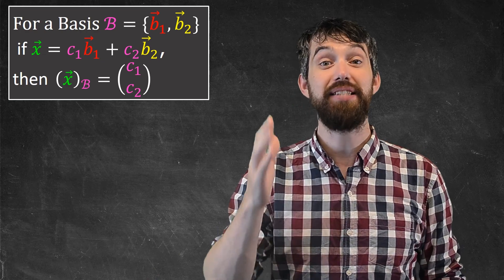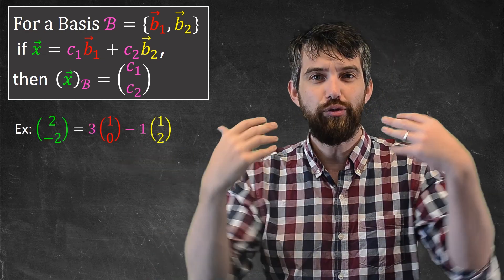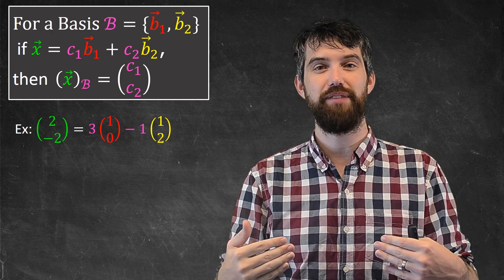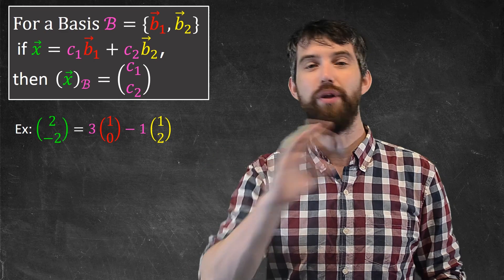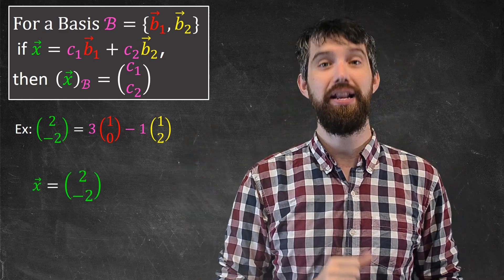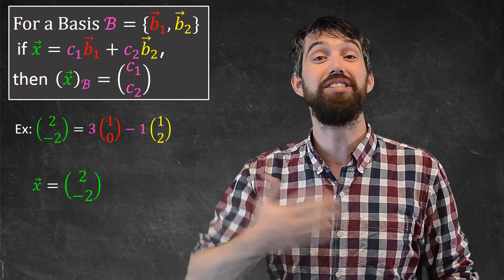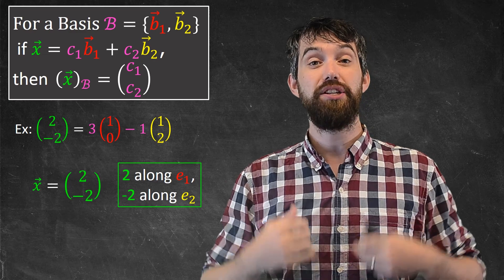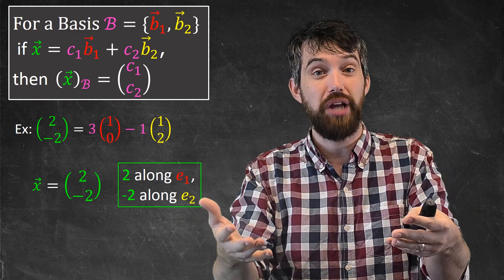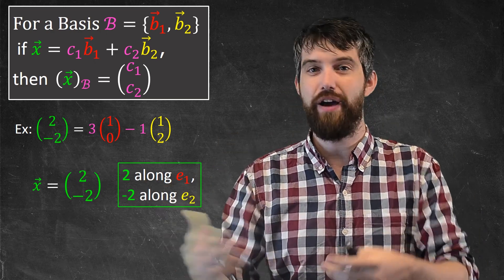So, let's see how this works for the example that we had. The example that we had was that the (2, -2) can be written as 3 times the first basis vector (1, 0), and minus 1 the second basis vector, the (1, 2). So, what are the important components? Well, the x in this scenario is the (2, -2). This is written in the standard basis and it just is an instruction. It tells me to go 2 times along the e1 and to go minus 2 times along the e2. That's what this vector is in the standard basis, an instruction of how to move.